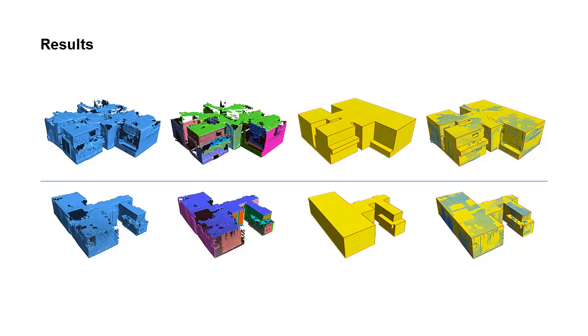Two indoor scenes consisting of multiple rooms are reconstructed. These two scenes were captured by Google Tango tablets. Our hypothesizing and selection strategy fills in the missing regions and reconstructs the permanent structures.